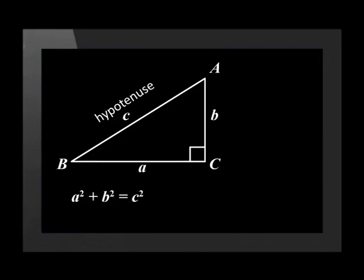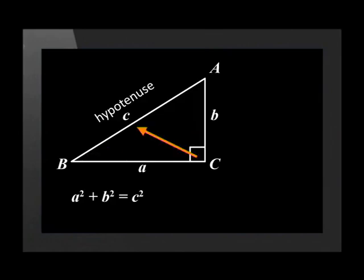A quick way to refer to sides of a triangle is to give them the names of the angle opposite them. The side opposite the angle labelled capital A is called small a. The side opposite the angle labelled capital B is called small b. And the side opposite the angle labelled capital C is called small c.